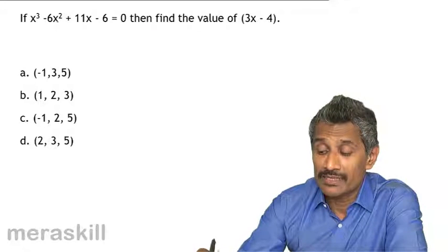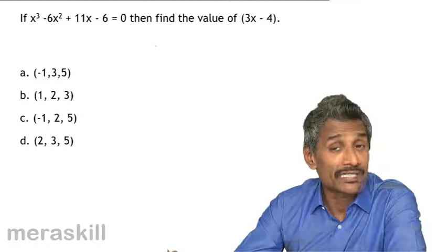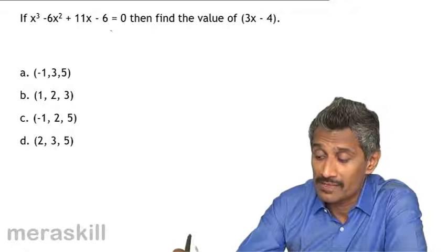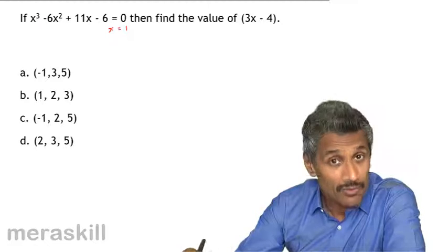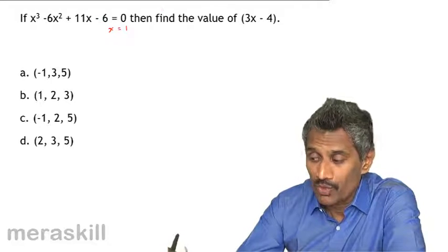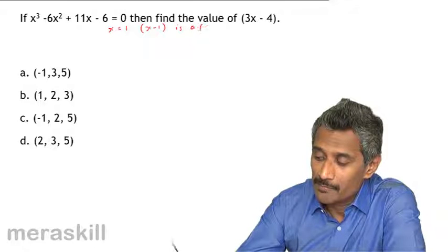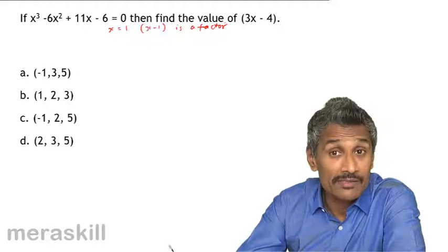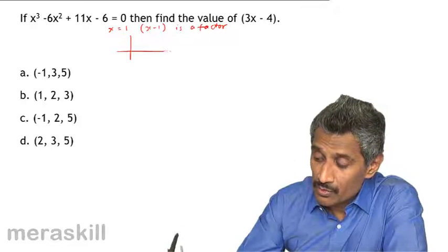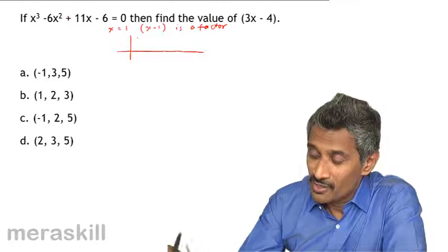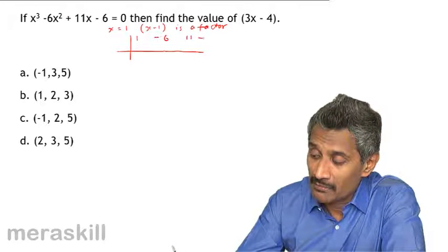Now we have x³ - 6x² + 11x - 6 = 0 and need to find the value of 3x - 4. Doing the same exercise: putting x = 1 gives 0, so x - 1 is a factor. We perform synthetic division, writing down the coefficients 1, -6, 11, -6, and placing 1 in the synthetic division box.